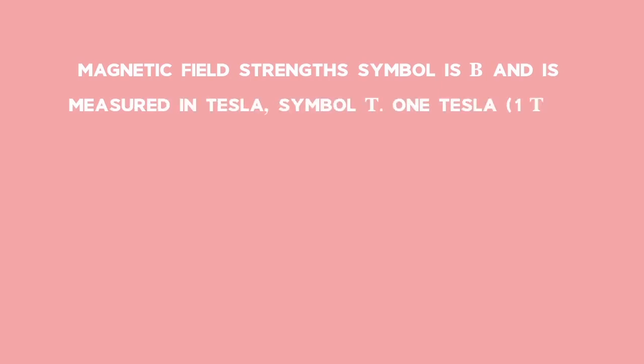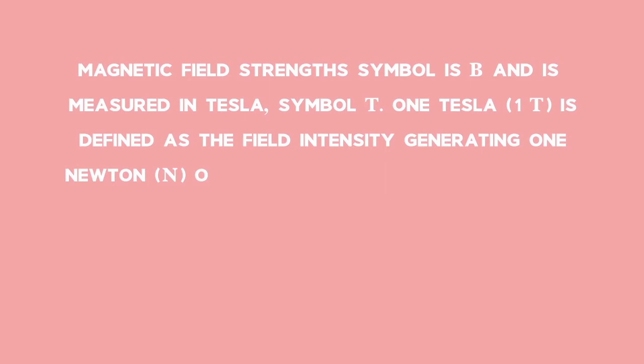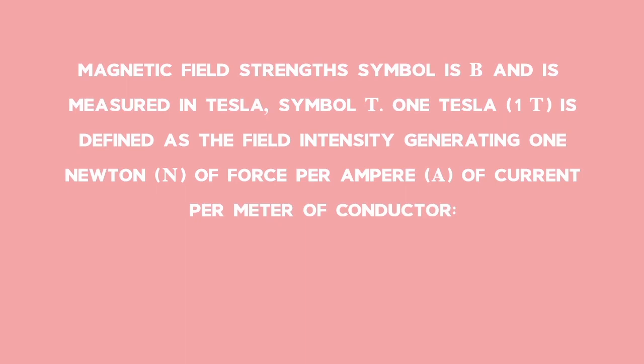One Tesla (1 T) is defined as the field intensity generating one newton (N) of force per ampere (A) of current per meter of conductor. T equals newton per second squared per meter or equals kilograms per second squared per ampere.